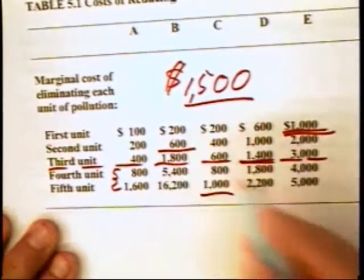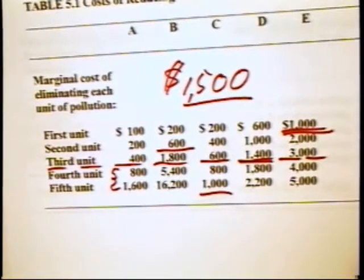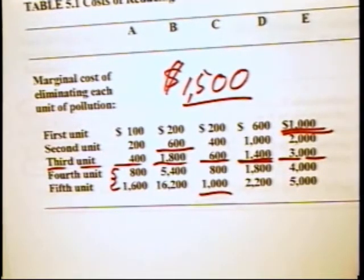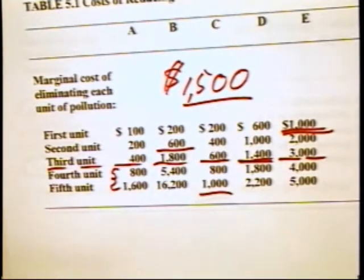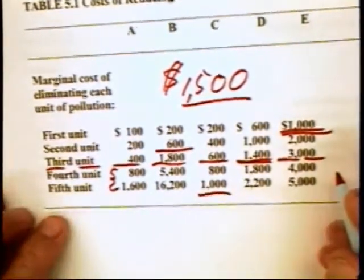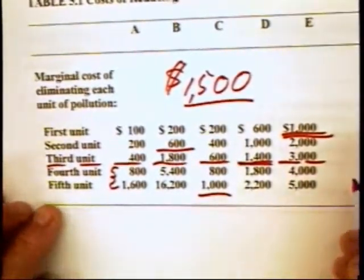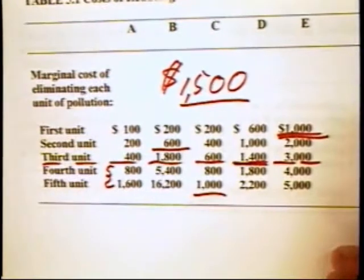If in fact the distribution of the tickets is the same, then we should have a situation in which we're back to the point where the cost of pollution is down to $9,300 as opposed to $13,500.